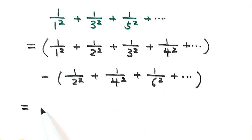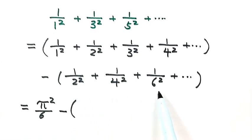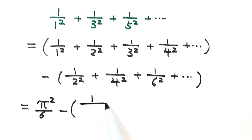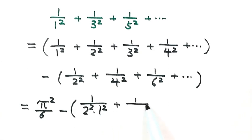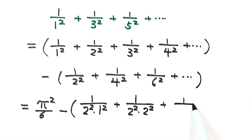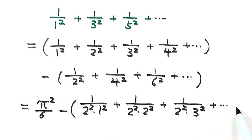So we have π²/6 minus the even terms. The even numbers 2, 4, 6 all have a factor of 2: 2 = 2×1, so 2² = 2²×1²; 4 = 2×2, so 4² = 2²×2²; 6 = 2×3, so 6² = 2²×3²; and so on.